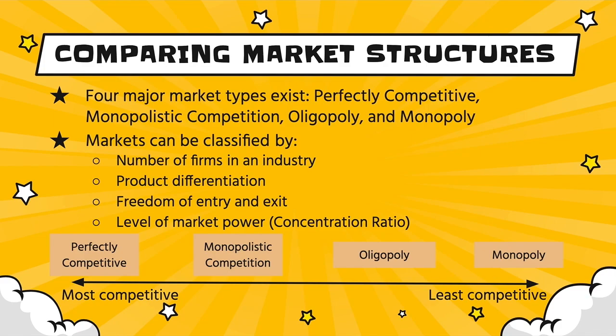First, let's take a look at the general market structures. Before we even get into any of the math, the four big market structures are perfectly competitive, monopolistic competition, oligopoly, and monopoly. Those four market structures can be classified by four categories: the number of firms in an industry, the level of product differentiation or availability of substitutes, the freedom or barriers to entry and exit, and the level of market power, which can be measured by concentration ratios.